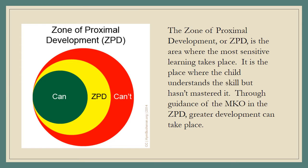The zone of proximal development, or ZPD, is the area where the most sensitive learning takes place. It is the place where the child understands the skill but hasn't mastered it. Through guidance of the MKO in the ZPD, greater development can take place.